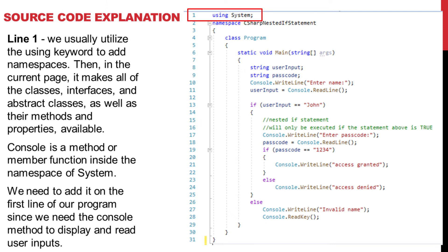Line 1: We usually utilize the using keyword to add namespaces. In the current page, it makes all of the classes, interfaces, and abstract classes, as well as their methods and properties, available. Console is a method or member function inside the namespace of System. We need to add it on the first line of our program since we need the console method to display and read user inputs.